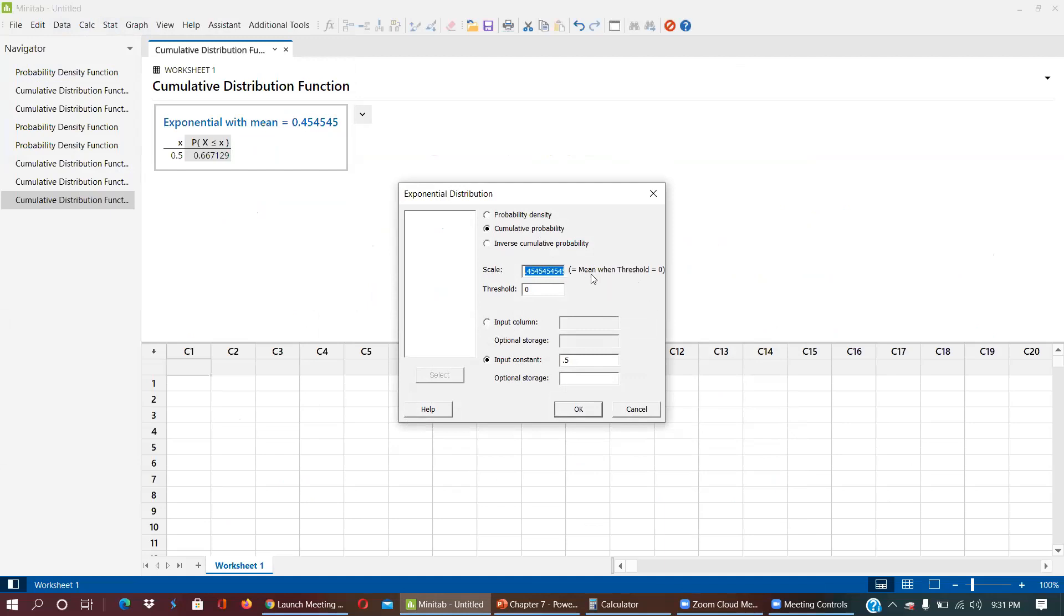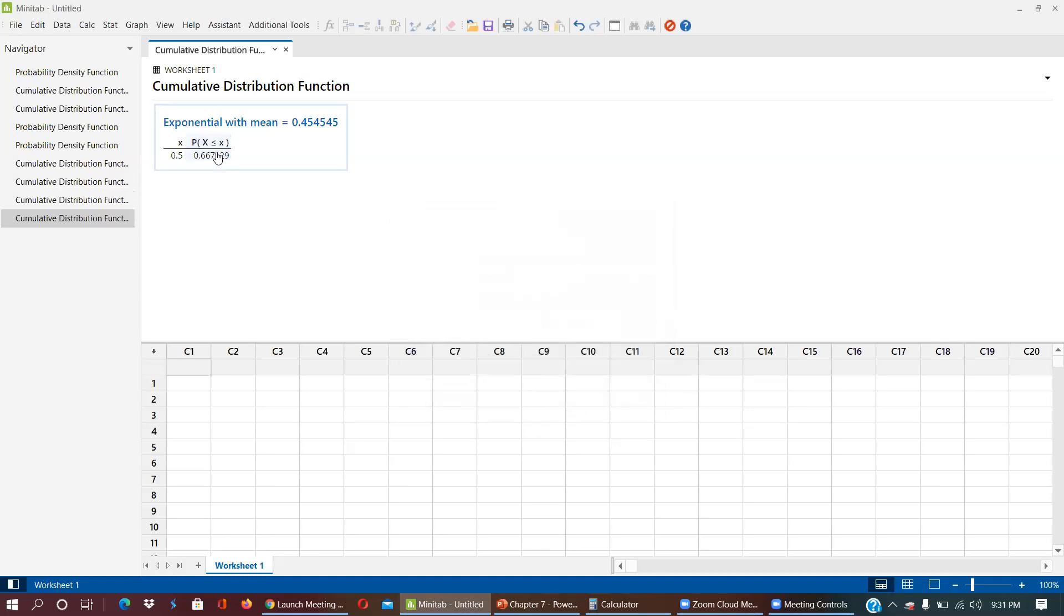The scale is 0.4545. May threshold always put zero, input constant is 0.5, and now look we always can get less than or equal value, less than or equal value.